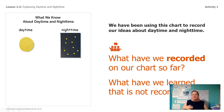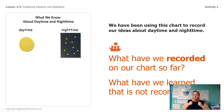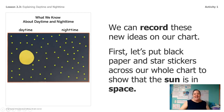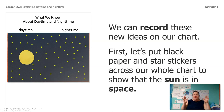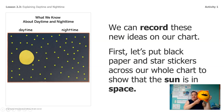We're going to make this chart called what we know about daytime and nighttime. One side is going to have daytime and the other side is going to have nighttime, and we'll record everything we know so far. So far we know that when it's daytime, you see the sun, and when it's nighttime, we see the stars. I'm going to make the whole chart have black paper with star stickers because even the sun is actually in space. So the sun is in space.